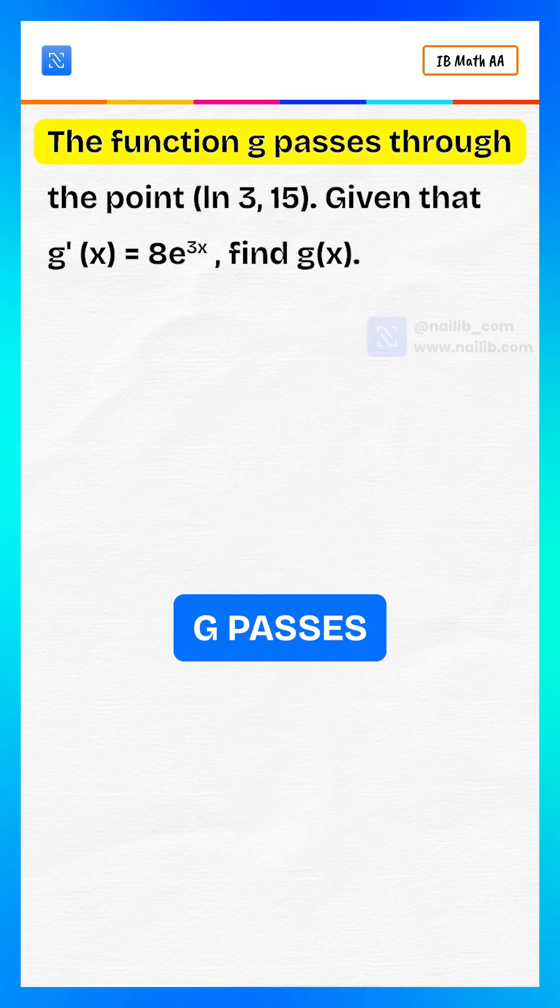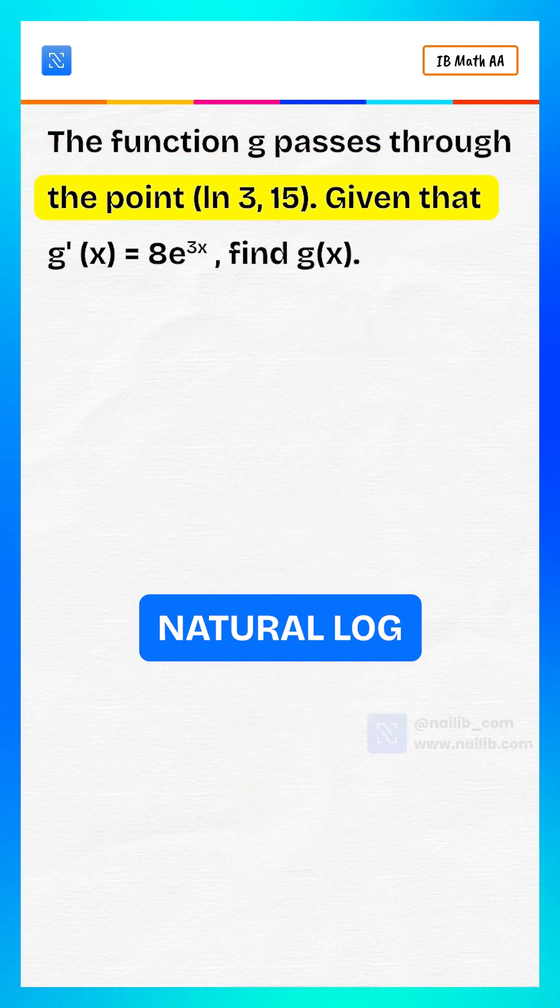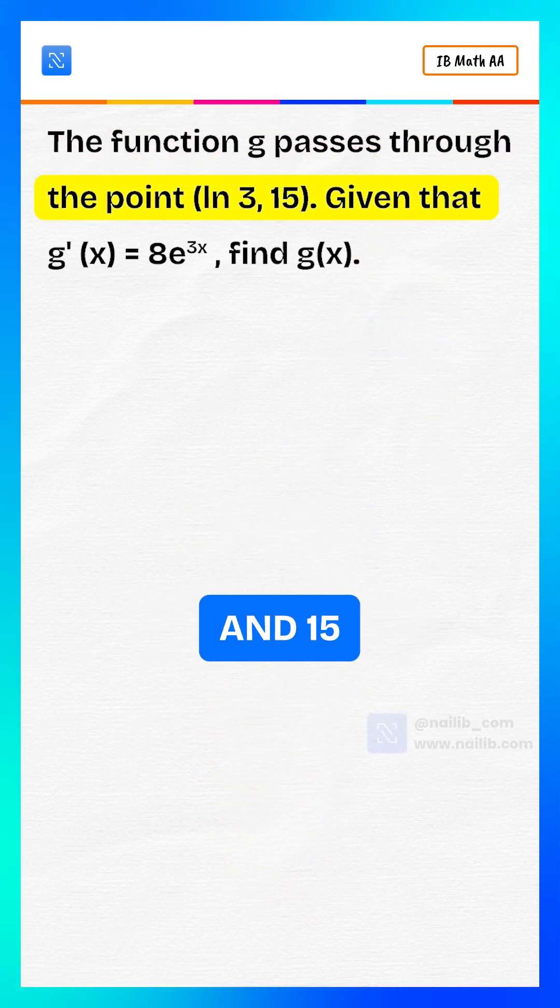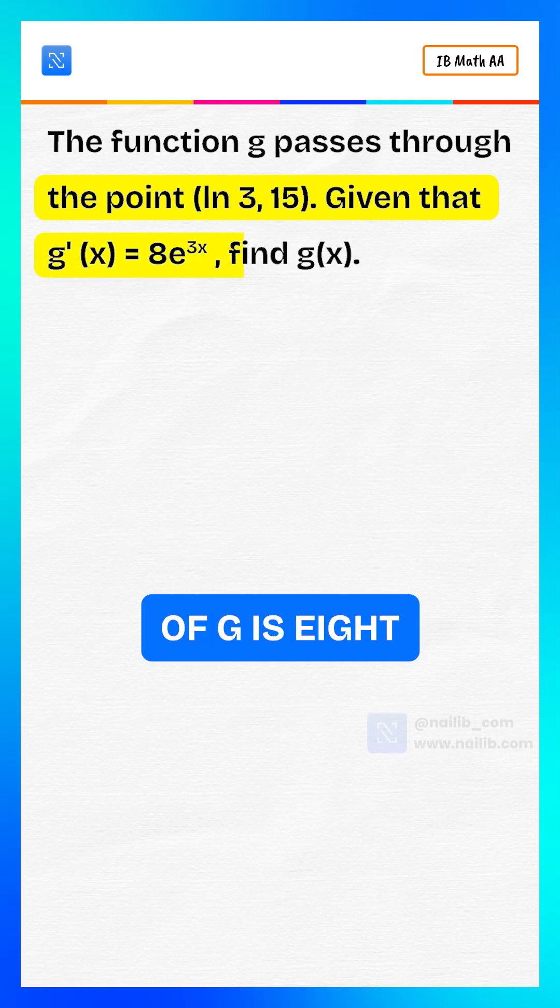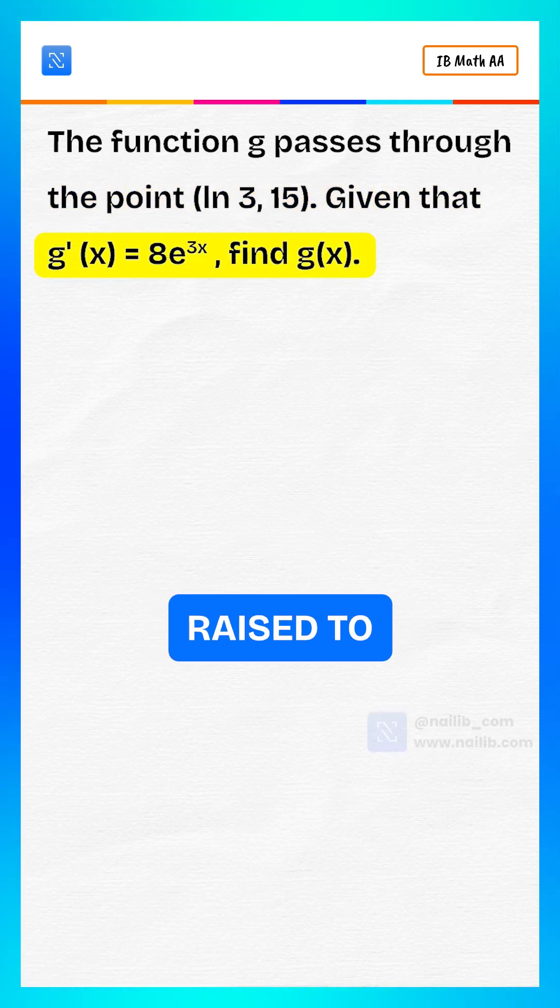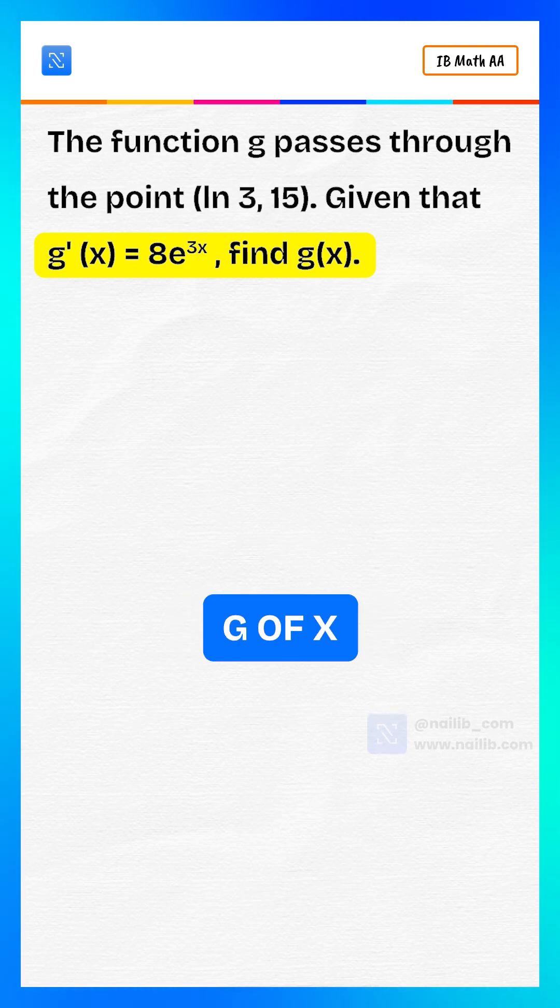The function g passes through the point natural log of 3 and 15, and the derivative of g is 8 times e raised to the power 3x. Let's find g of x.